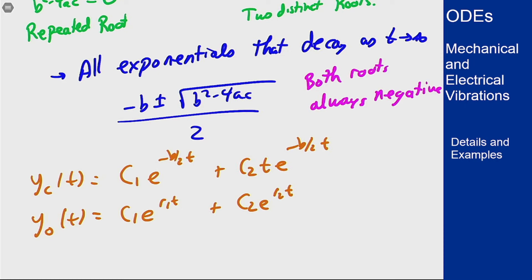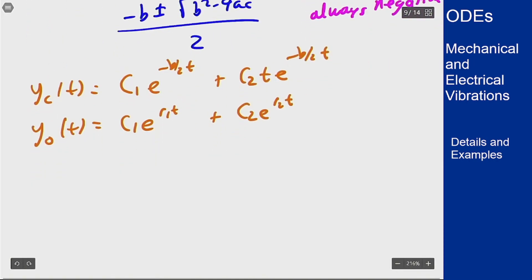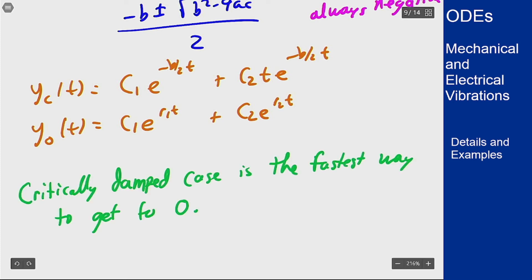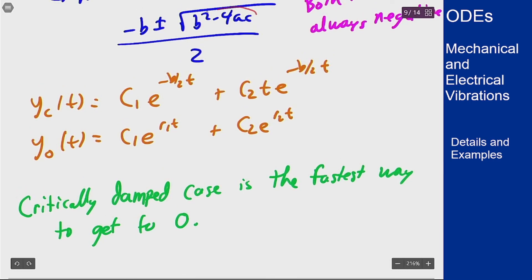How do you tell them apart? Well the easiest way to note this is that the critically damped case is the fastest way to get back to 0. This is able to decay the fastest. Why is that? Well that's because of the fact I mentioned before where if this is a positive number it is going to be less in magnitude than b, but that means that -b plus that number is going to be closer to 0 than -b/2, which means it will decay slower.